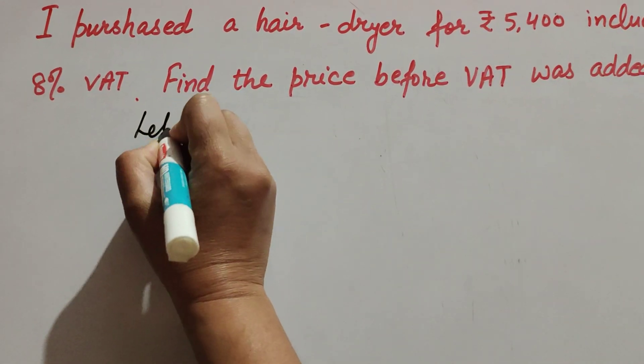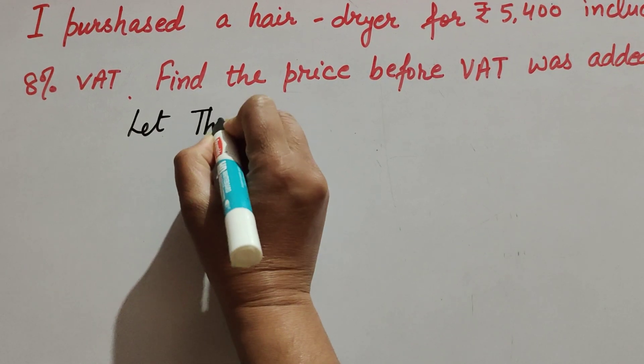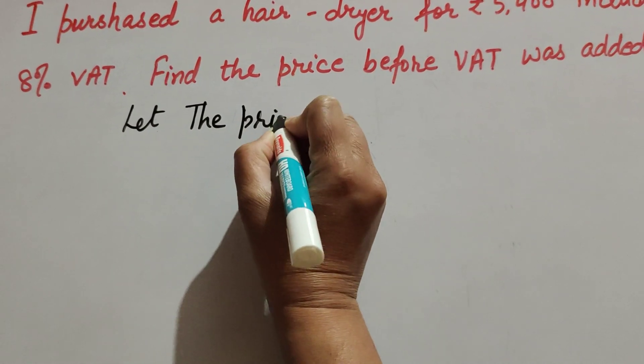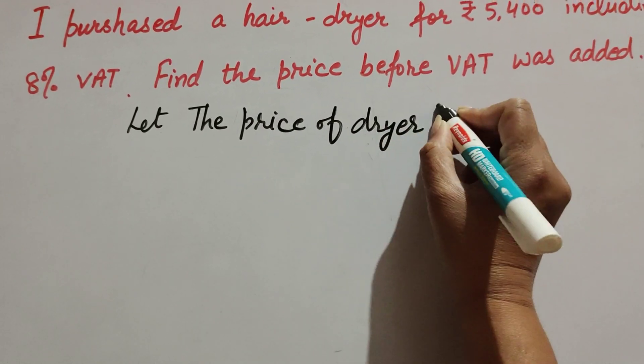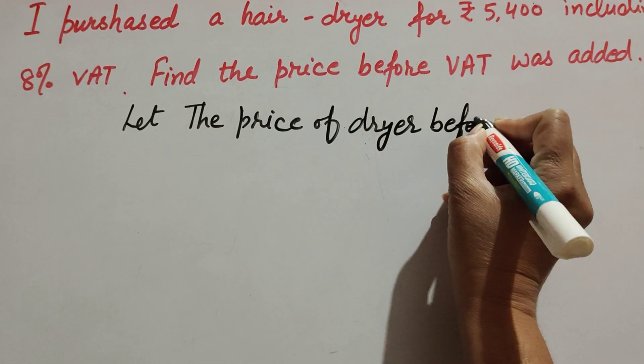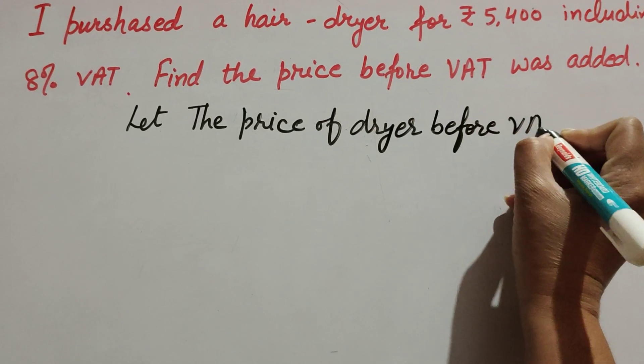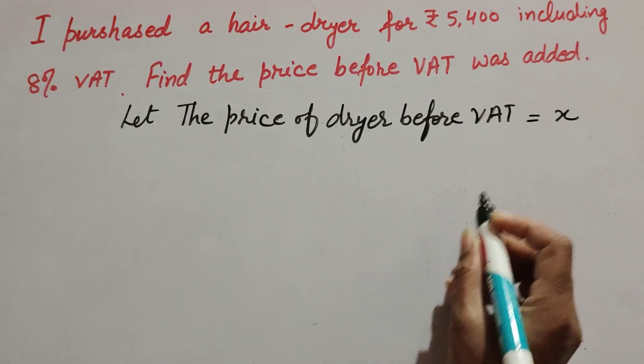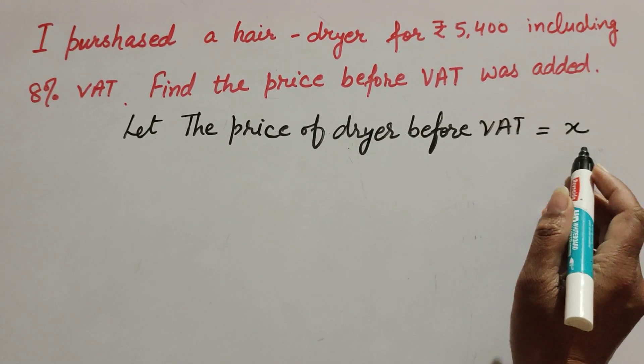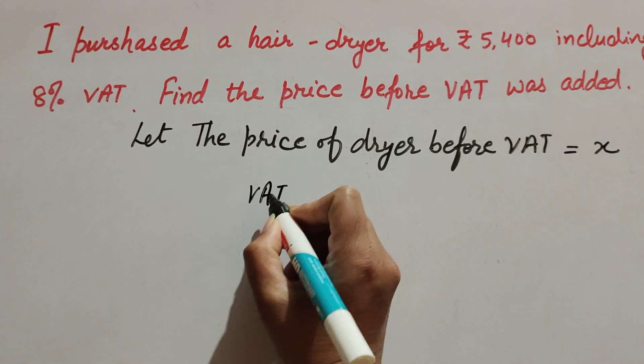So let the price of the dryer before VAT equal x. We suppose this because we need to find the price of the dryer before VAT was added. The given information is VAT percentage, which is equal to 8%.